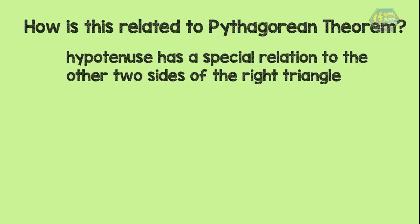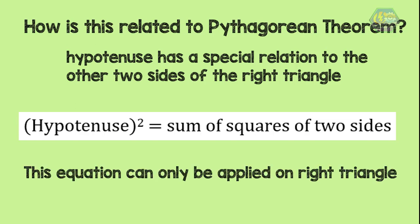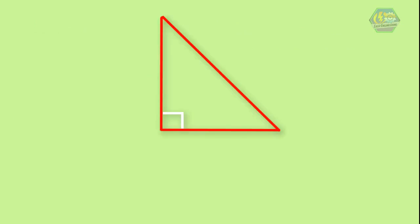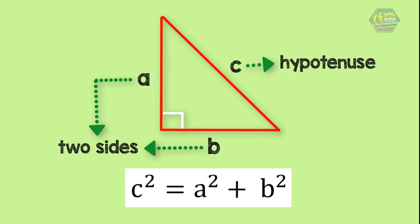Now, how is this related to the Pythagorean theorem? The Pythagorean theorem says that the hypotenuse has a special relation to the other two sides of the right triangle. The square of the hypotenuse is equal to the sum of the squares of the two sides. Just remember that this equation can only be applied to right triangles. Let's say this right triangle has sides of length a, b, and c, where a and b are the two legs and c is the hypotenuse. So using the Pythagorean theorem, the equation becomes c² = a² + b².